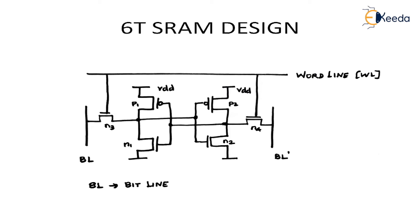BL stands for bit line and is on the left side; bit line bar is on the right side. Bit line and bit line bar are just names given to the lines — they can be of the same polarity or opposite polarity. Don't assume they are always opposite to each other. So two cross-coupled inverters along with two pass transistors give us the 6-transistor SRAM design.